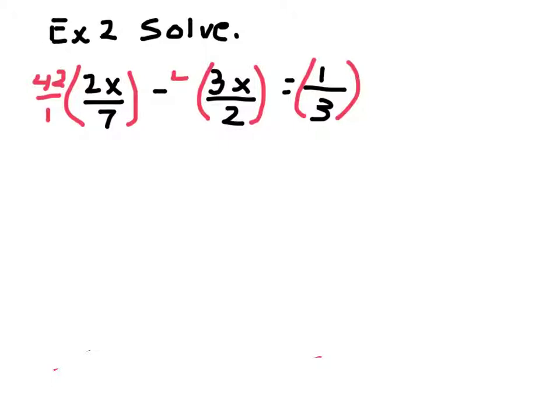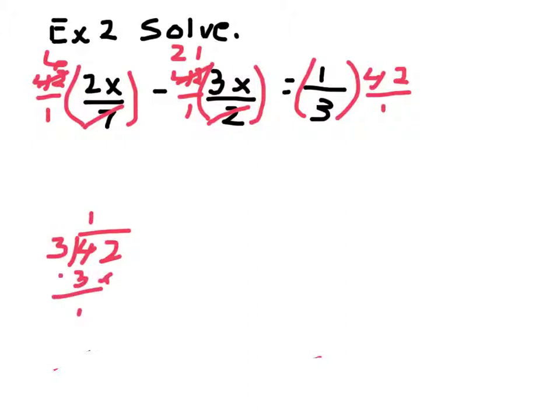So, I'm going to write it as 42 over 1 just to emphasize the cross-cancelling that I'm going to do here in a little bit. So, I can divide both these by 7, that leaves 6. Divide both these by 2, that leaves 21. I'm not sure on the 42. Let's see, 42 divided by 3 once. And that's going to be 3 into 12, a 4. So, I can divide both these by 3 and that leaves 14.